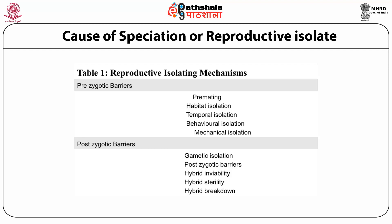Post-zygotic isolating mechanisms operate after hybrid zygotes have been formed, either by reducing hybrid viability or by impairing hybrid fertility. The zygote from mating between different organisms might not survive or might not reach sexual maturity. If they do reach sexual maturity, in some cases they might not produce functional gametes. Any of these circumstances could prevent populations living in the same territory from exchanging genes. Mule is a classical example of a post-zygotic barrier.